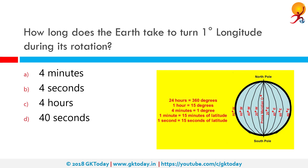How long does Earth take to turn 1 degree longitude during its rotation? It takes an average of 24 hours from the time the sun is directly over a certain longitude to the next time the sun is directly over the same longitude. There are 360 degrees of longitude around the whole planet. So if we divide 24 hours by 360 degrees of longitude, we get 4 minutes per degree of longitude. The correct answer is 4 minutes.